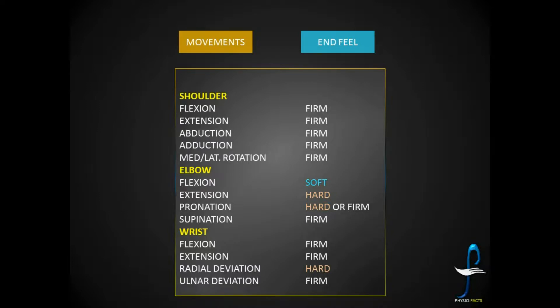Elbow flexion: soft. Elbow extension: hard end feel. Interesting thing is that pronation gives hard end feel. It can also be firm if radial head and the ulna come in contact to each other. At times the ligaments are also limiting the range of motion, in that case it will be firm. And wrist radial deviation gives hard end feel.